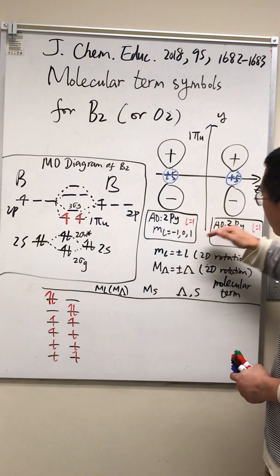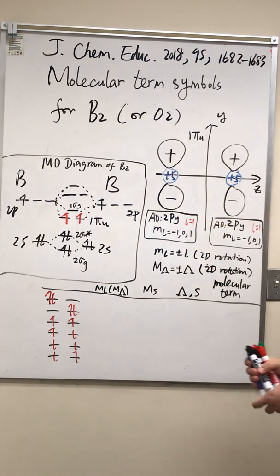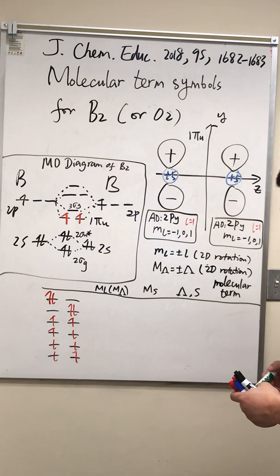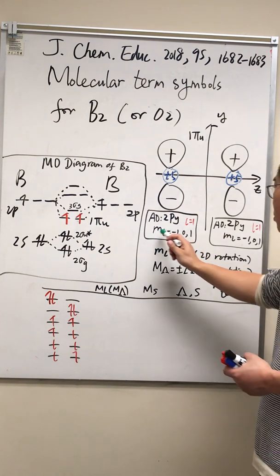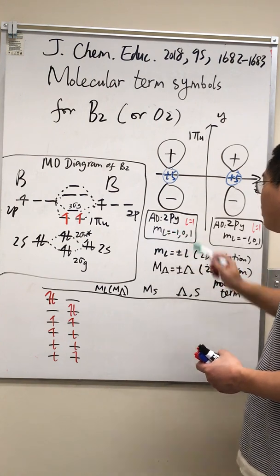When we're talking about an atomic orbital, such as the 2P orbital in an atom, the electron can rotate about the nucleus in three different directions. It can rotate about the x-axis, y-axis, and z-axis. It's called three-dimensional rotation. And in a three-dimensional rotation, M sub L can be from negative L to positive L.